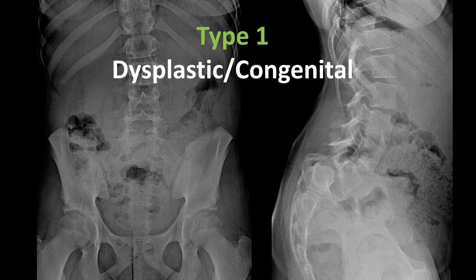Type 1, dysplastic or congenital spondylolisthesis, involves some type of congenital osseous abnormality leading to the spondylolisthesis. This is typically the most severe type. It usually involves congenital underdevelopment of the upper sacrum articular process, sometimes the neural arch of L5, and dysplasia of the L5-S1 facet joints and articulations.